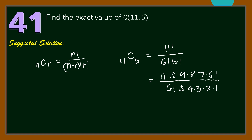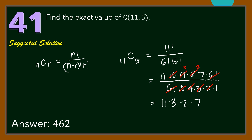Let us do the cancellation method. 6 factorial over 6 factorial is 1. Then 5 times 2 is 10, so 10 over 10 is 1. Also, 9 divided by 3 is 3, and 8 divided by 4 is 2. Hence, we are left with 11 times 3 times 2 times 7, and this is equal to 462.